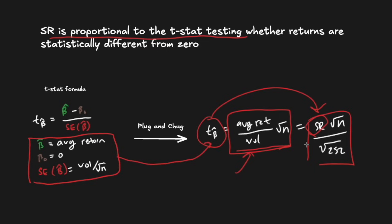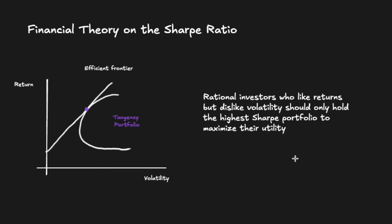And finally, there is an academic justification for the Sharpe ratio, which I'll just briefly mention. We don't like getting too academic here, but there is some financial theory which says that rational investors who like returns but dislike risk (as measured by volatility) should only hold a single portfolio to maximize their happiness or utility. And that portfolio happens to be the highest Sharpe portfolio, which is also known as the tangency portfolio in academic finance. So we should always be striving to maximize the Sharpe ratio of our investments.